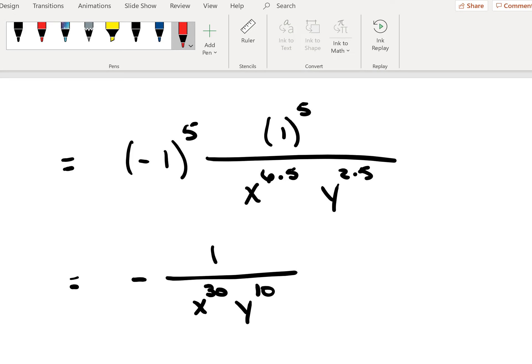This gives us the negative one raised to the fifth power and then the numerator one raised to the fifth power. And then in the denominator, we know that power to power multiplies. So we have x to the sixth times five and y to the two times five.